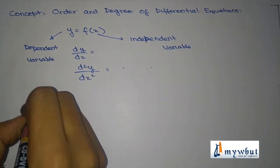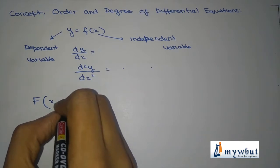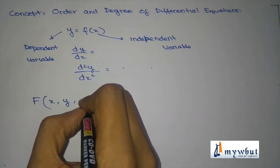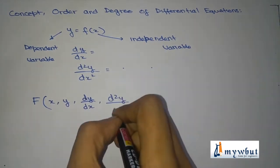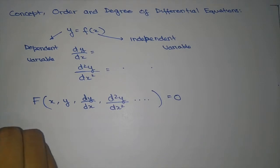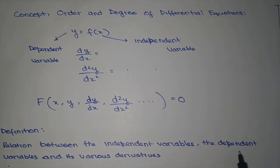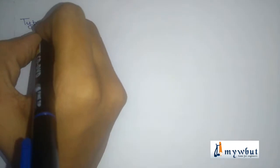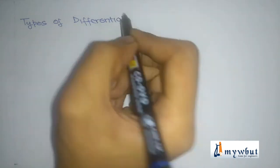So what is the differential equation? A differential equation is the relation between the independent variable, the dependent variable, and the derivatives of it — such as dy by dx, d²y by dx², etc., set equal to 0. So the definition of a differential equation is the relation between the independent variables, the dependent variables, and its various types of differential equations.